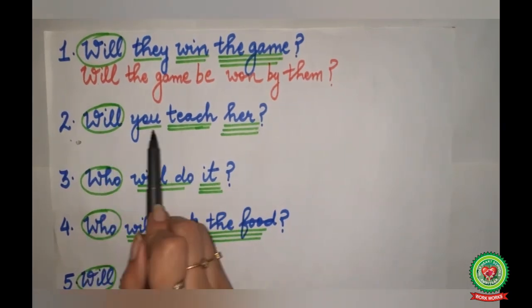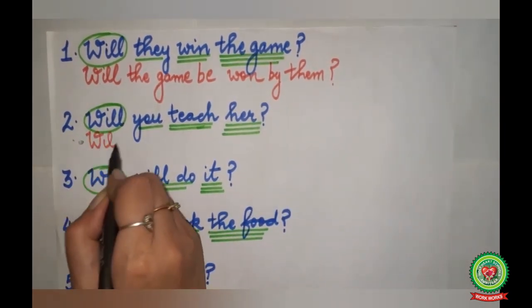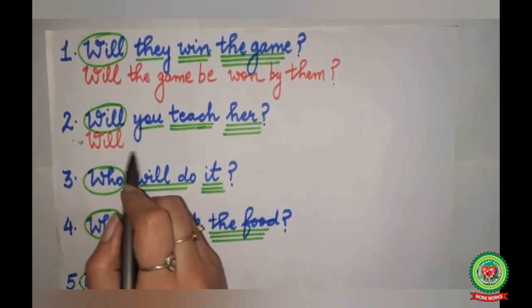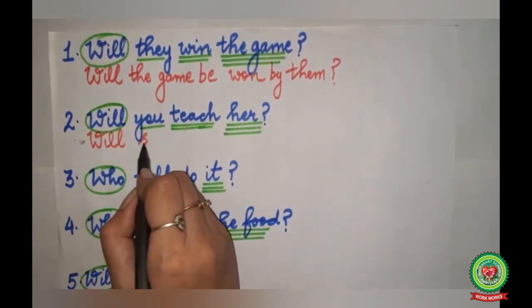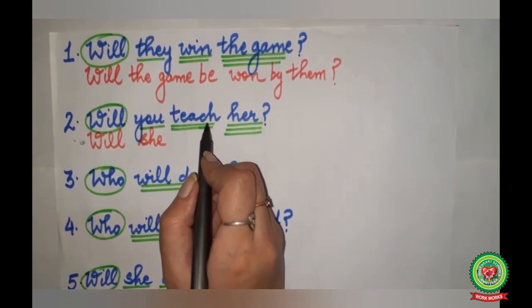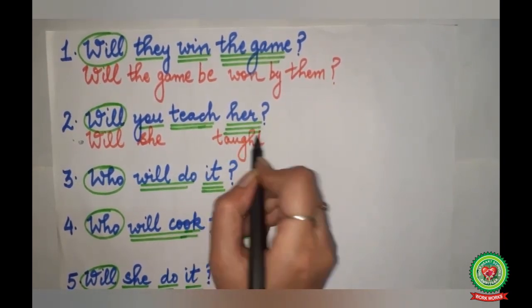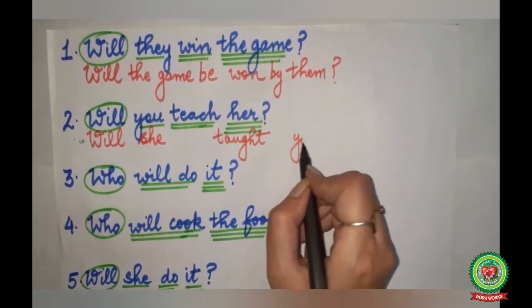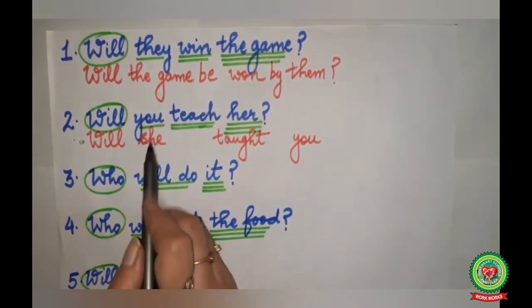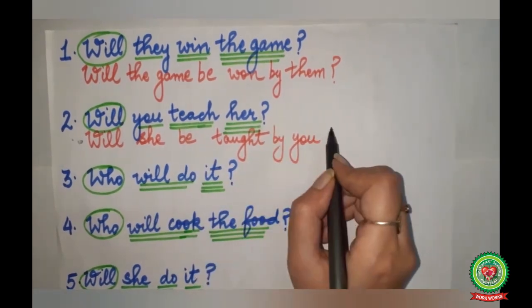Second question: 'Will you teach her?' 'Will' will remain. 'Her' will come to the beginning. 'You' will go to the end. 'Teach' will change into 'taught'. We add 'be' before 'taught'. The answer: 'Will she be taught by you?'